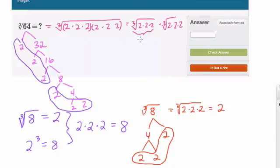So this right here, the cubed root of 2 times 2 times 2 is 2. The cubed root of this is also 2. We're multiplying them. 2 times 2 is 4, and that's our answer.